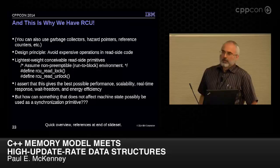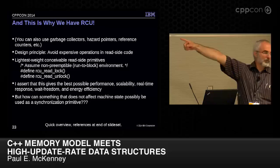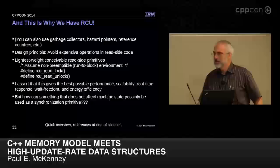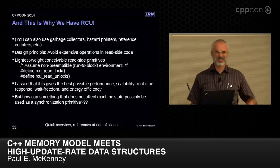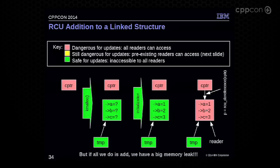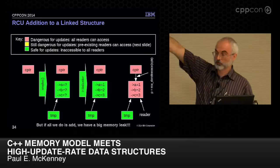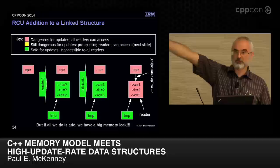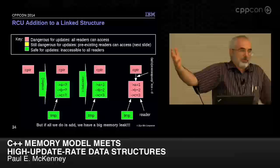A natural question is: if rcu_read_lock is just a macro that expands to nothing, there's no code being emitted — it's not even reaching the compiler back end, let alone the machine — it's not affecting machine state. So how are you doing synchronization? Well, let's look at adding an element to a linked list. We use color coding: red means there are readers present, yellow means no new readers but old ones may still be there, and green means it's safe for updaters because readers can't see it.